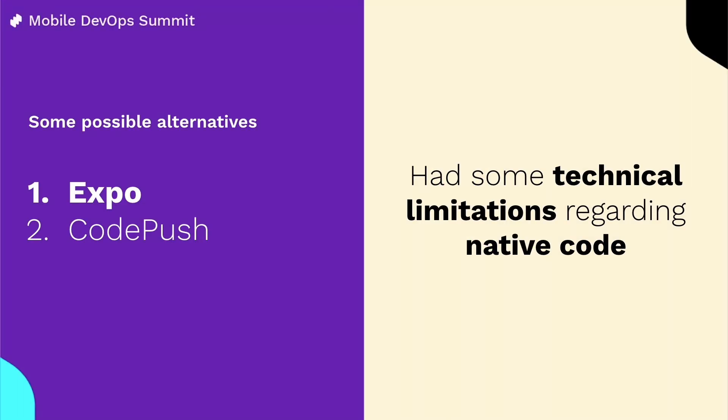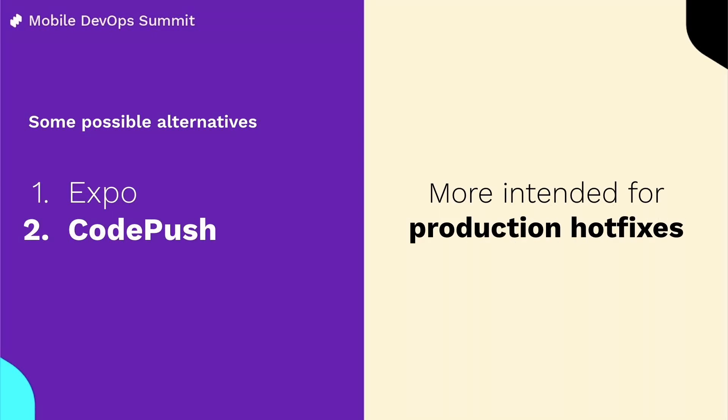We found some alternatives that seemed like a possible solution. Expo looked great but wasn't an option for us due to technical limitations — we couldn't use custom native code or third-party modules not part of the Expo SDK. We also considered CodePush, but it's more intended for hot fixes on production, and our biggest pain was at earlier stages when teams were iterating a feature on a daily basis. Unfortunately, none of this solved our problem.